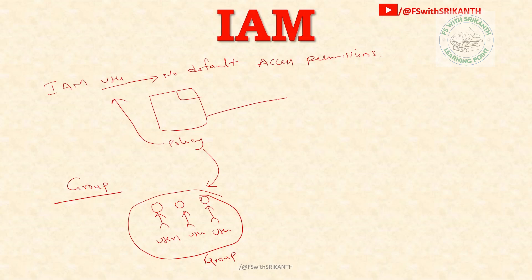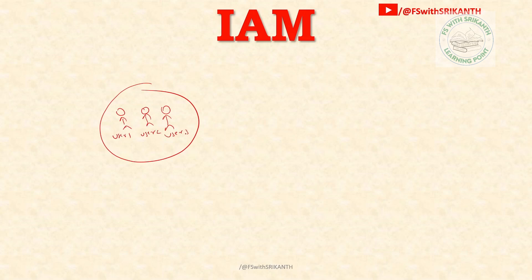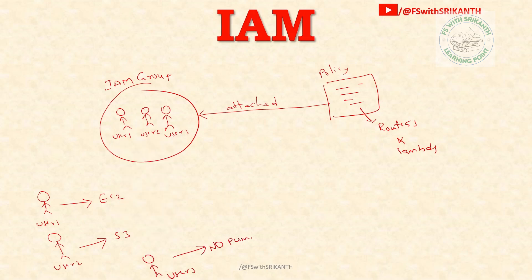So this policy can be shared among many people. This is an IAM Group. Here user one has EC2 access, user two has S3. Now in this IAM Group, we are adding one policy — this policy may contain Route 53 and Lambda. Two policies are attached to this group. So a new user added to this group will inherit Route 53 and Lambda permissions.